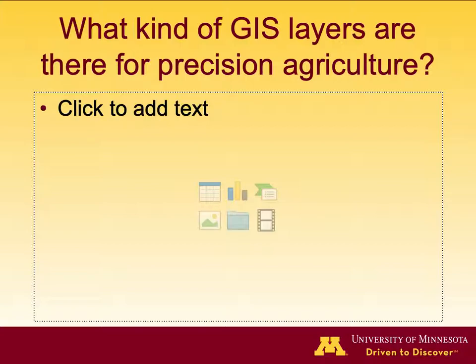Revisiting a previous question: what kinds of GIS layers are there for precision agriculture? Layers can include soil type, soil moisture, nutrition, EC map, rainfall map, yield map, moisture content map, and temperature. All this information can be GIS layers in precision agriculture, as long as they play an important role in making agricultural management decisions.